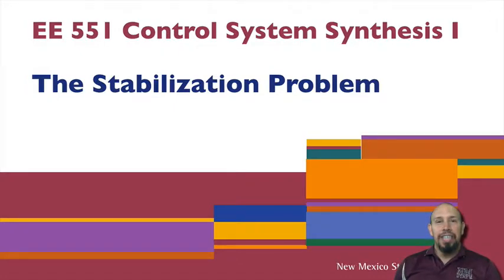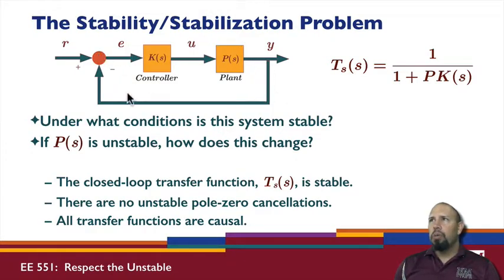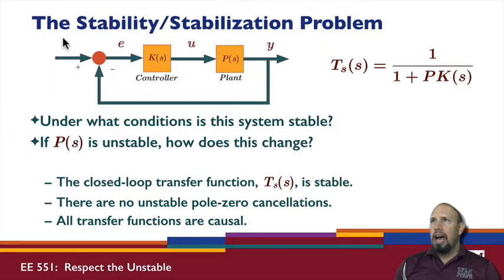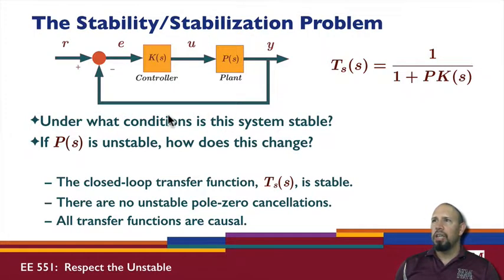We're now looking at the stabilization problem. In the stabilization problem, we have a control loop that looks like this. This is not the only kind of control loop, but generally speaking, we're going to have a closed-loop control with some kind of controller in the loop. Whether we have a reference input or signals such as the control y going directly into the controller, there are different forms for control. Generally, we end up with a loop and want to investigate its stability — specifically, under what conditions is the system stable?